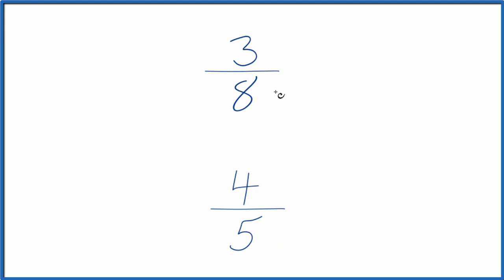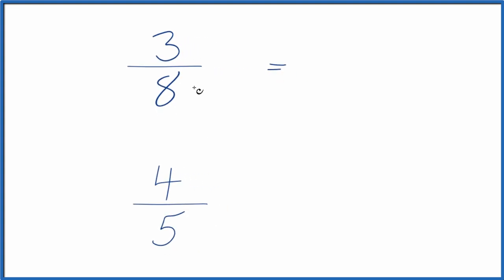So we need to find a common denominator, something that both 8 and 5 go into evenly. So we could say if we multiply 8 times 5, that would give us 40. And then down here, we could multiply 5 times the 8, and that would also give us 40. So now we have a common denominator.